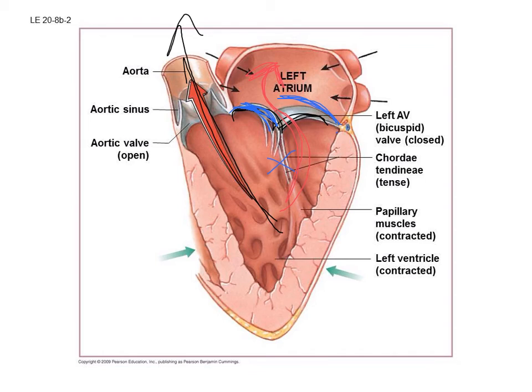A minor murmur may be negligible, but if a third of the blood flows back the wrong way, the heart must beat about a third faster to compensate. During exercise, that may not be possible. Doctors call it a murmur because with a good stethoscope and training, you can actually hear a gurgling sound of blood flowing in the wrong direction — that's where the term 'murmur' comes from.